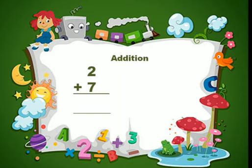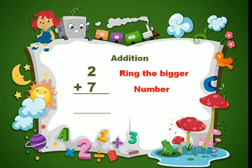Next problem: 2 plus 7. First, what should you do, children? You ring the bigger number. In these two numbers, which number is bigger? Yes, 7 is the bigger number. You circle that number.